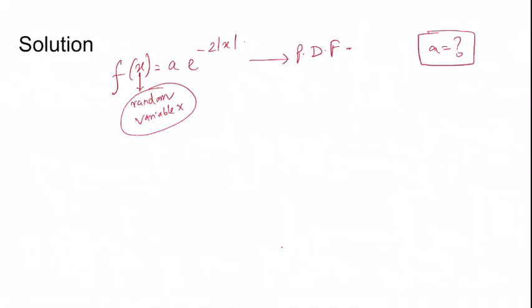Coming to the solution, f(x) is a probability density function for a random variable x and given by a e^(-2|x|), where the value of a is being asked.